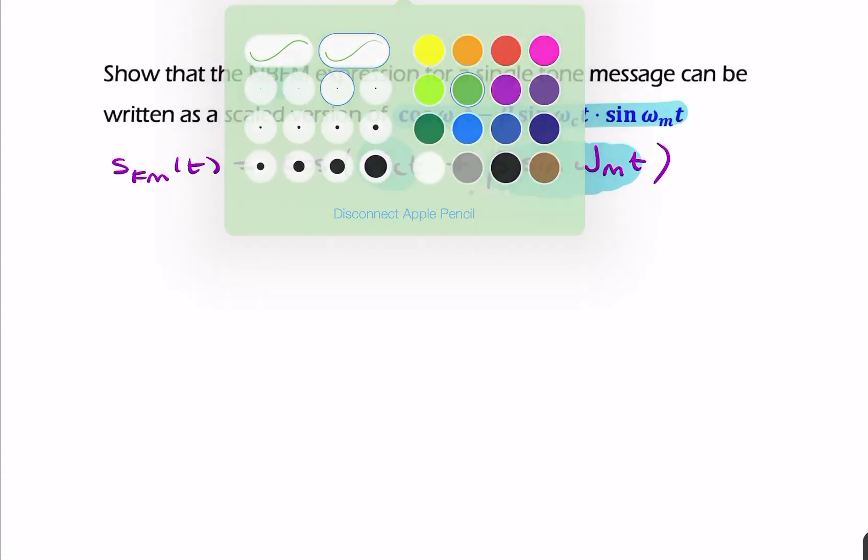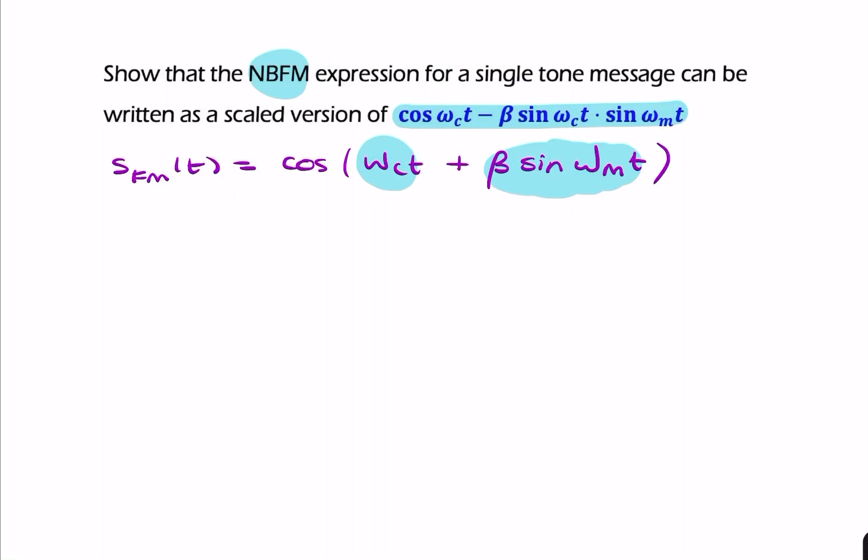Remember what the cosine of a sum equals. From trigonometry, cos(A + B) = cos A cos B - sin A sin B.